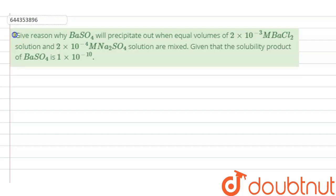The question is, give reason why barium sulfate will precipitate out when equal volumes of 2×10⁻³ M BaCl₂ solution and 2×10⁻⁴ M Na₂SO₄ solution are mixed. Given that the solubility product of BaSO₄ is 1×10⁻¹⁰.